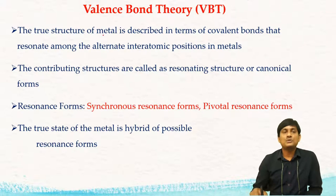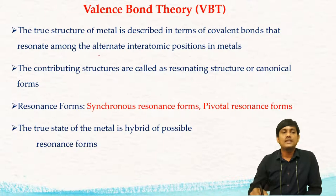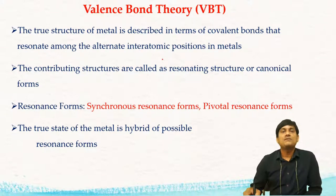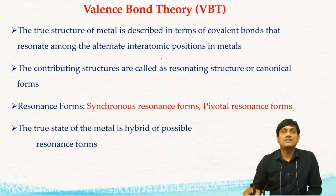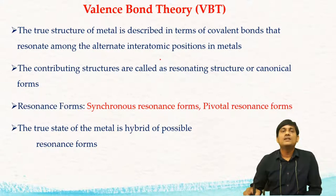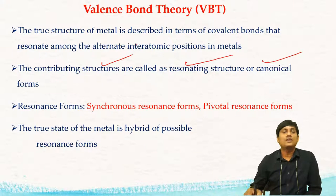The true structure of a metal is described in terms of covalent bonds that resonate among the alternate inter-atomic positions in metals. There is a resonance or delocalization of covalent bonds among the alternate inter-atomic positions in metals, leading to the formation of different structures.